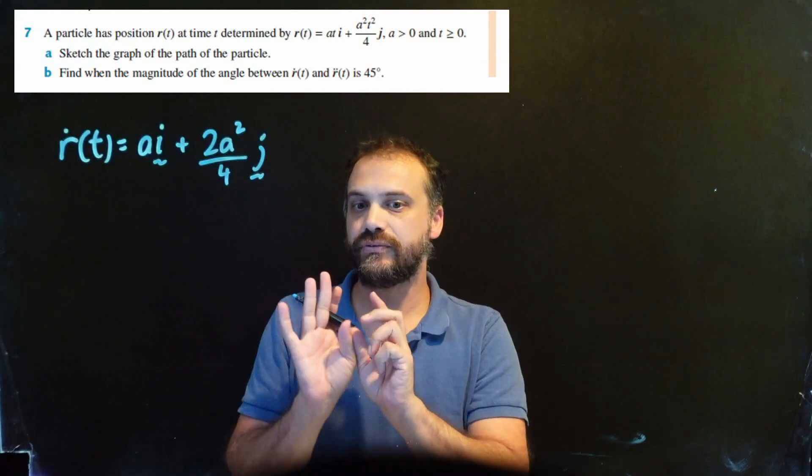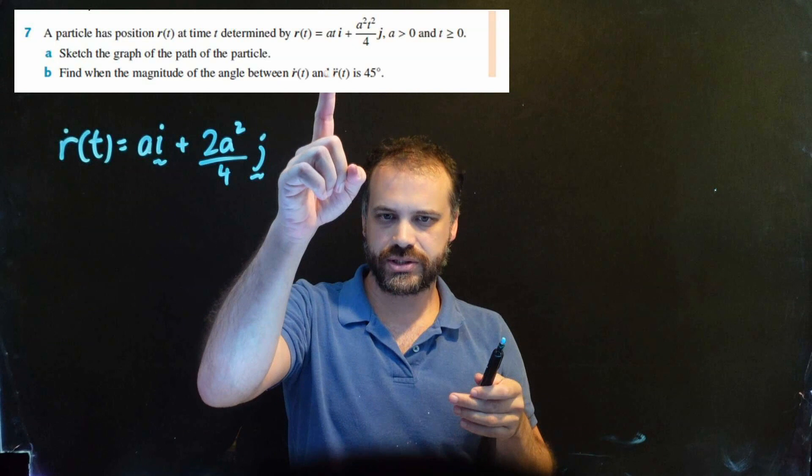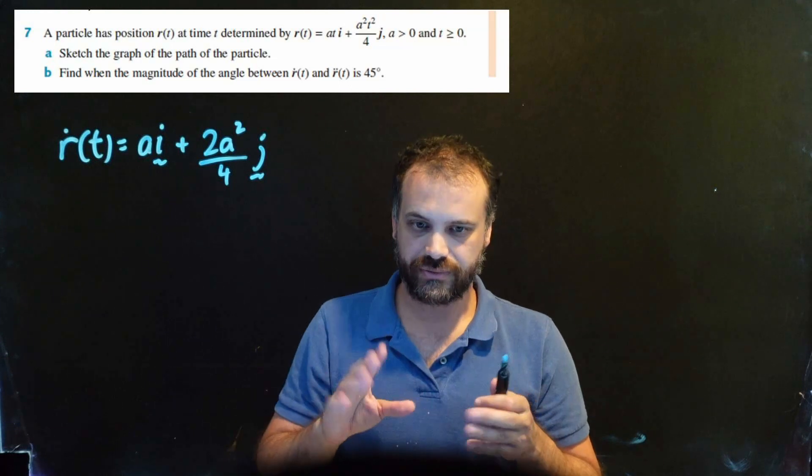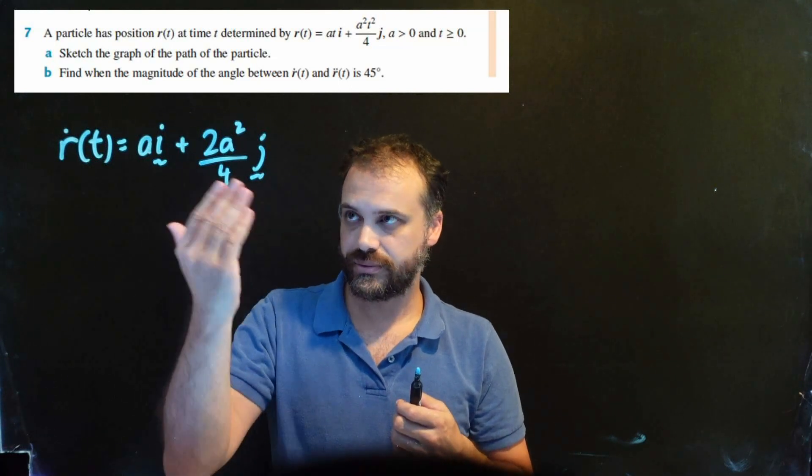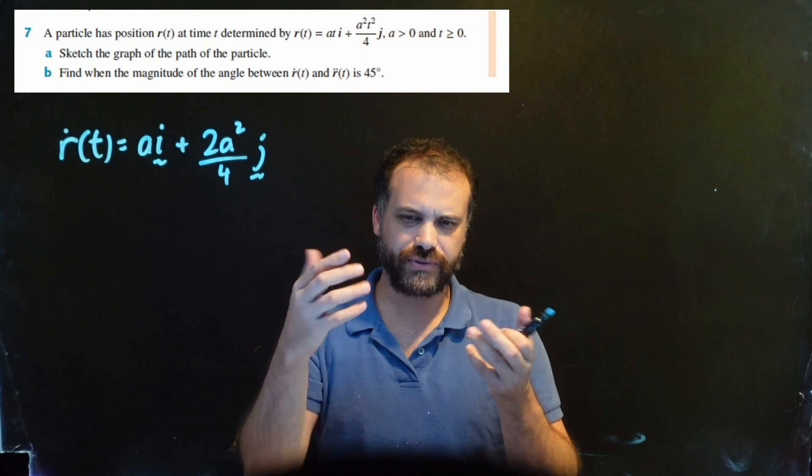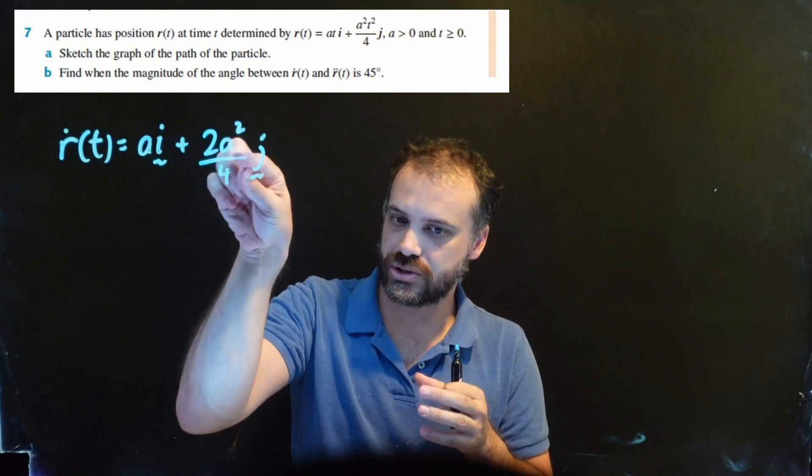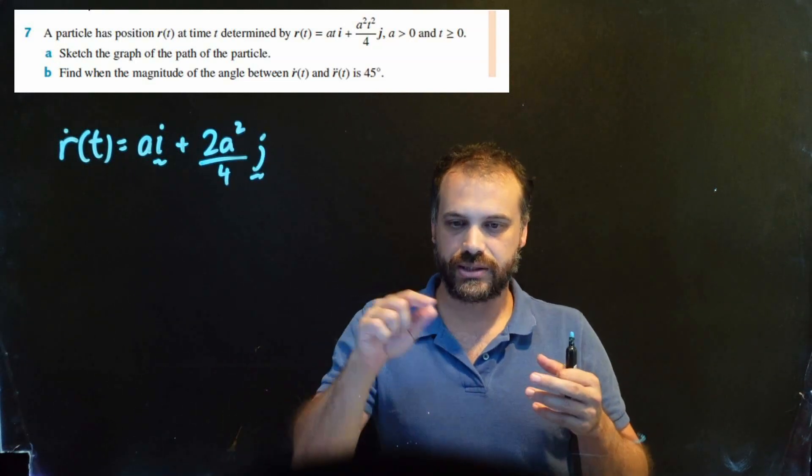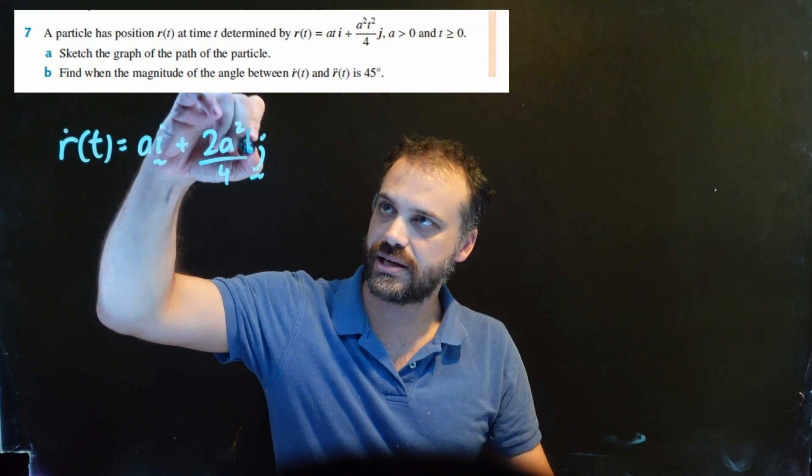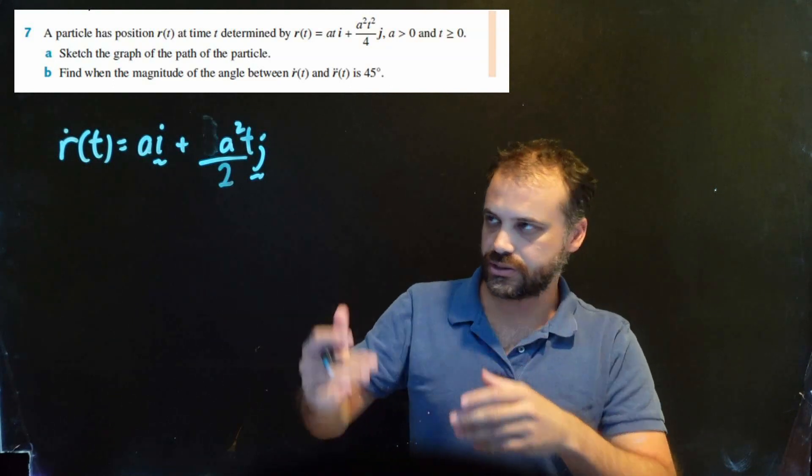Now, this is my first derivative, and this can confuse people because of this a. a is a number, it's like the number 5, right? So the question is, what is the derivative of 5t i, if a was 5, the derivative of 5t i is just 5. So the derivative of at i is just a, a is just a number. And same here where it says a squared, a squared is a number. A lot of people want to derive it and write like 2a, but that's not it. a squared is a number, so we just keep a squared there. The derivative of t squared is 2t, so I'm left with 2 out the front, a squared, and a t right there. And of course, 2 over 4 is 1 over 2. So there's r dot t.